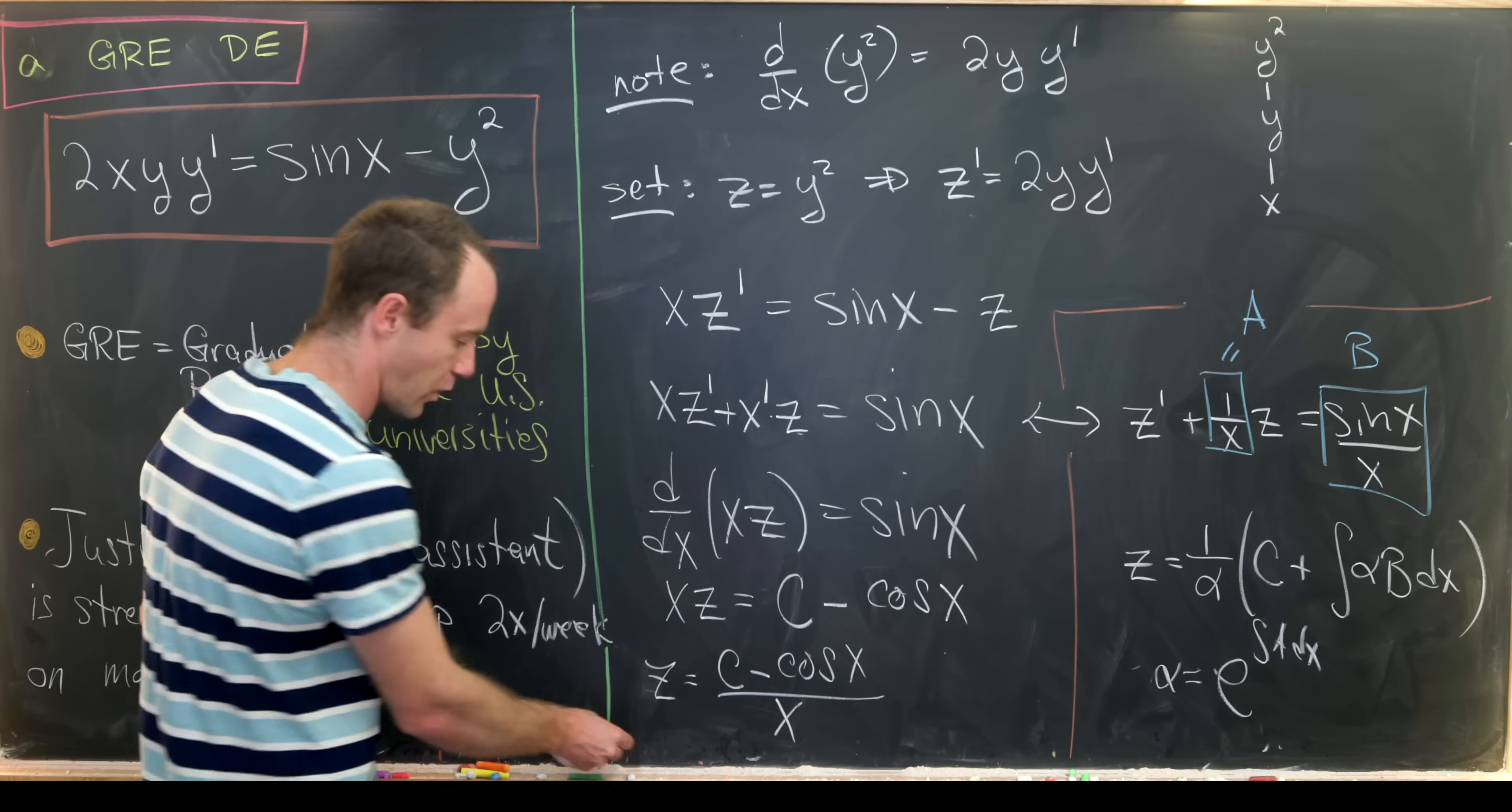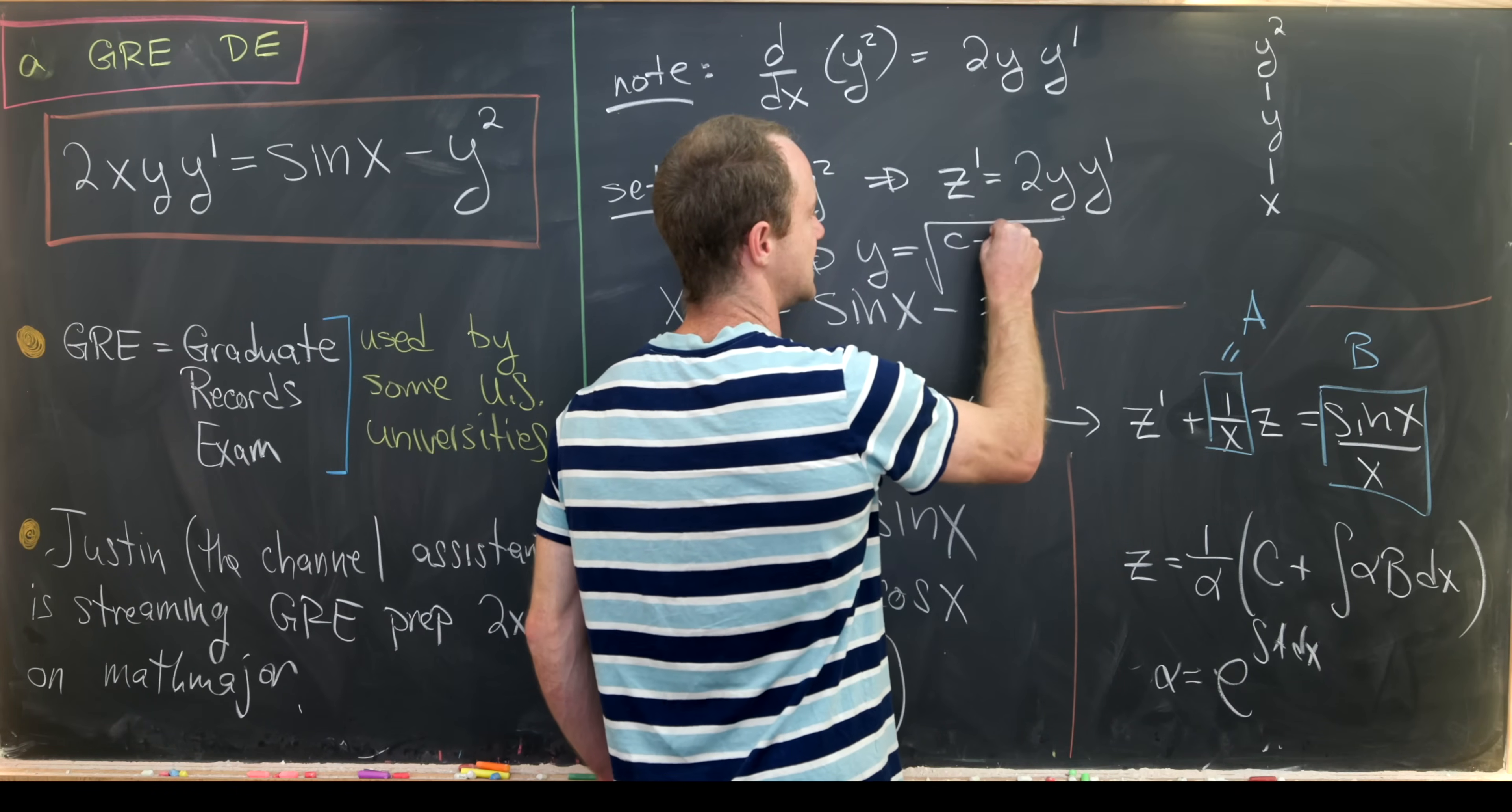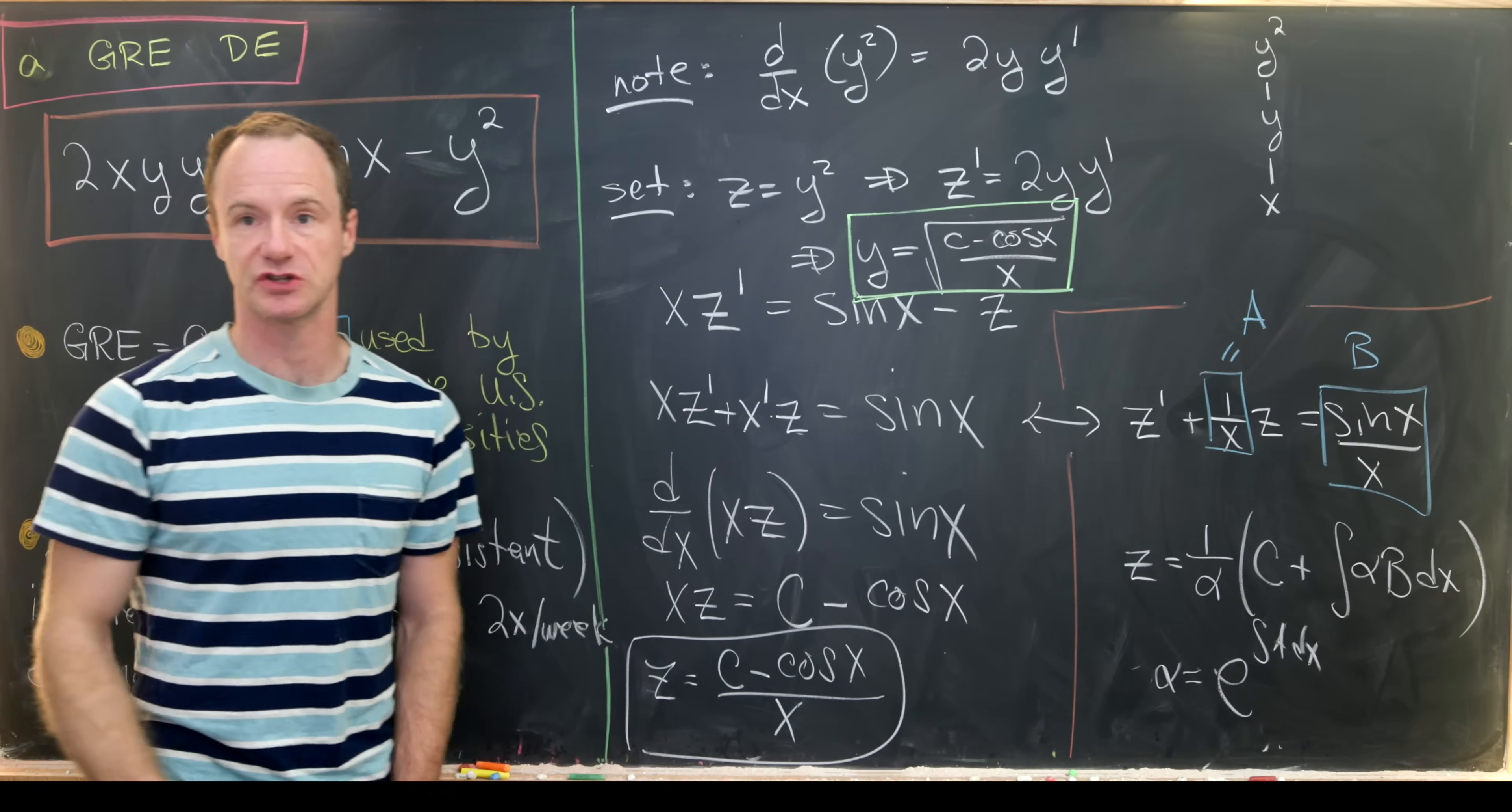But that's not quite my solution because I made this substitution at the beginning: z was equal to y squared. So that means y is equal to the square root of this whole thing, the square root of c minus the cosine of x all over x. Let's put a nice box around that as that is our final solution to this differential equation.